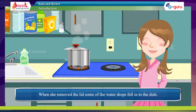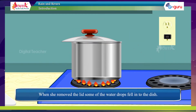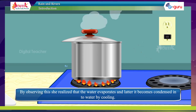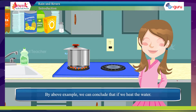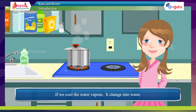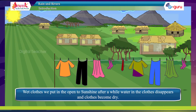When she removed the lid, some of the water drops fell back into the dish. By observing this, she realized that water evaporates and later becomes condensed into water by cooling. From this example, we can conclude that if we heat water, it changes into water vapor, and if we cool the water vapor, it changes back into water.